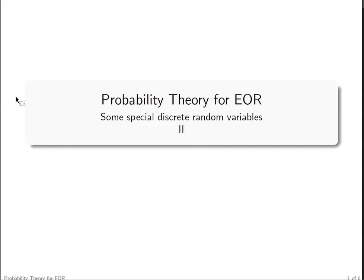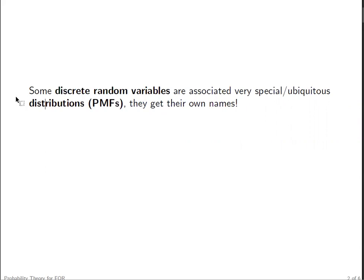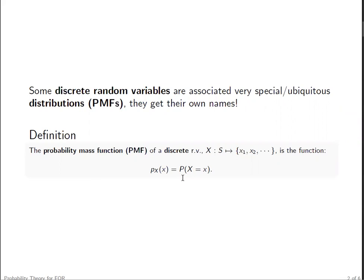This video is about two additional special discrete random variables. For some discrete random variables, they have very special distributions and even get their own names. To know the distributions of discrete random variables, it's enough to learn their PMF functions. The PMF function specifies all the probability values of events generated by random variable X of the type X equals small x, where small x comes from the support of the discrete random variable X. In the following, we'll discuss two discrete random variables and specify their PMF. We also discuss some additional properties. Let's take a look at the first one: negative binomial.